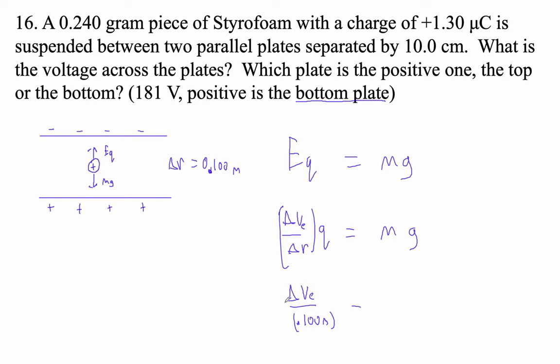And then our Q is 1.30 times 10 to the minus 6th. And then that equals, what's our mass? 0.24 grams, right? Notice it's grams. So that's going to be 0.24 times 10 to the minus 3rd kilograms, right? Times 9.81. Because we're on Earth, right?